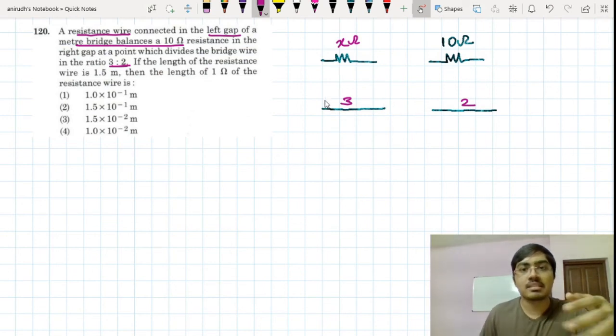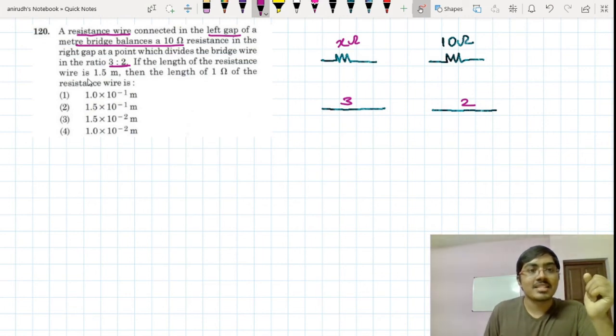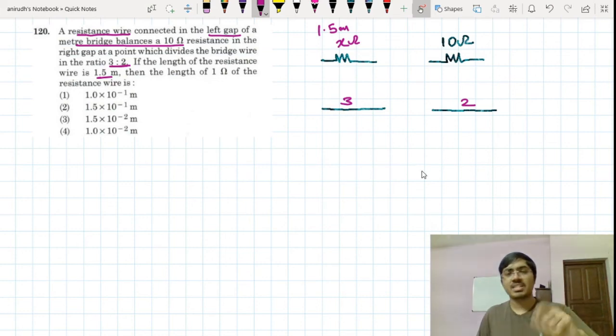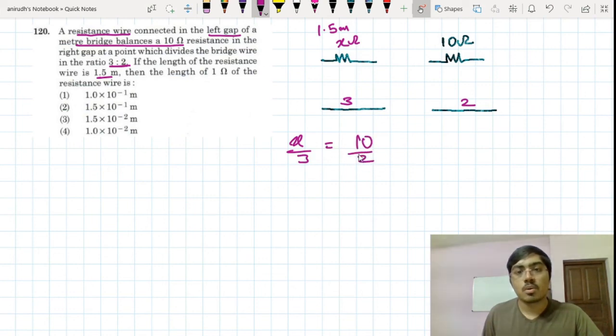And the ratio is 3 is to 2. If this is 3, this is 2. The ratio can be taken directly. If the length of the resistance wire is 1.5 meter, this resistance wire is having 1.5 meter length. It's a direct easy question. So we can take the ratios here, x by 3 is equal to 10 by 2. So obviously, this is 15 ohm.